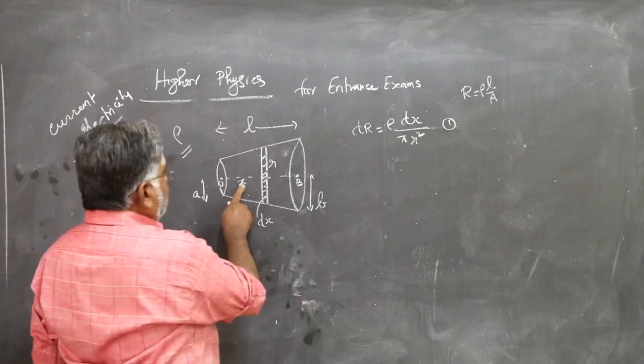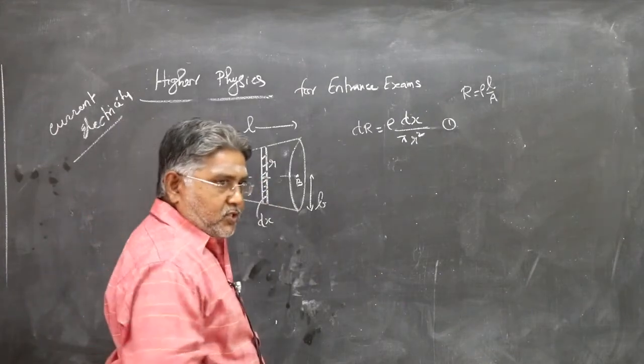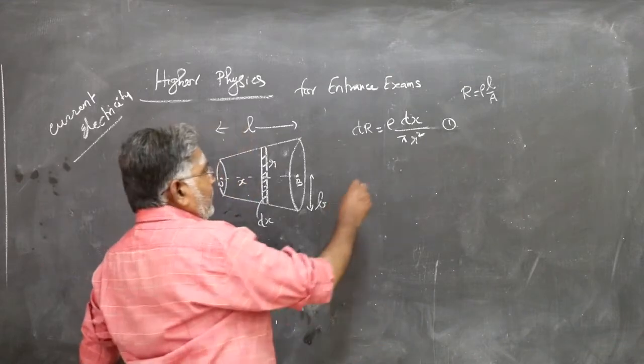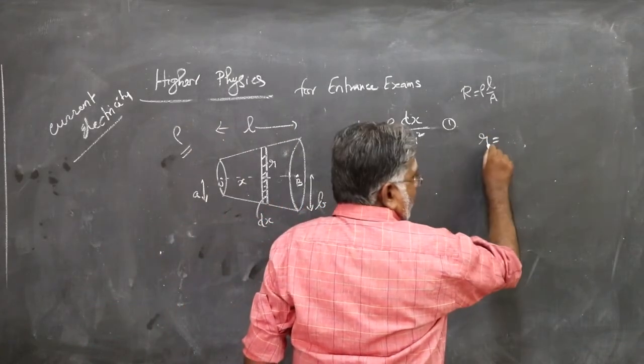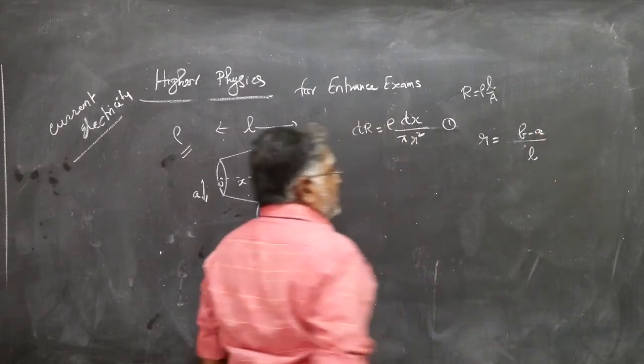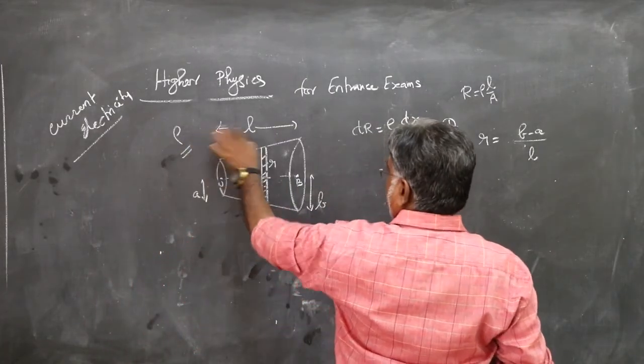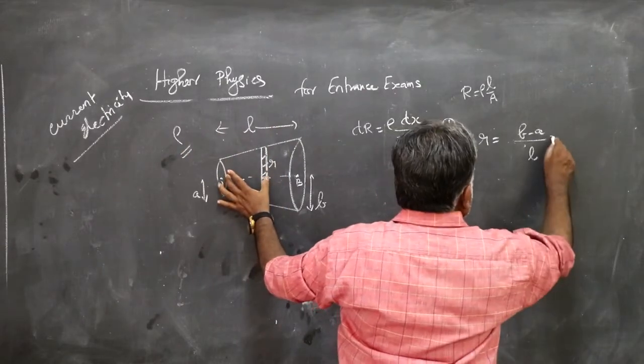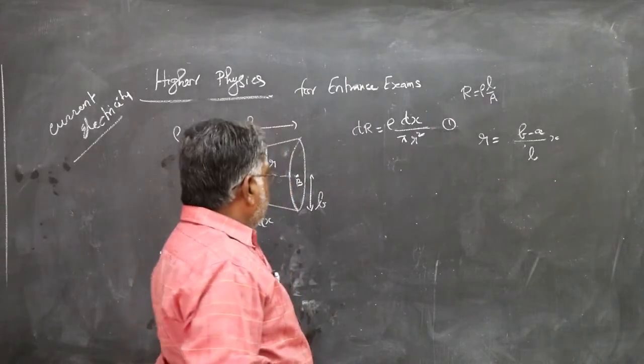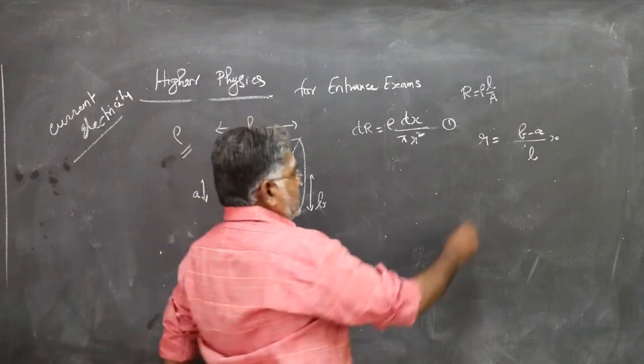So how much will be the increase in radius as you go from O to this point or as you go at distance x along the axis? For a length L, the increase in radius is B minus A. Therefore, for this much length x, the increase in radius will be (B minus A) by L times x. This is increase in radius.